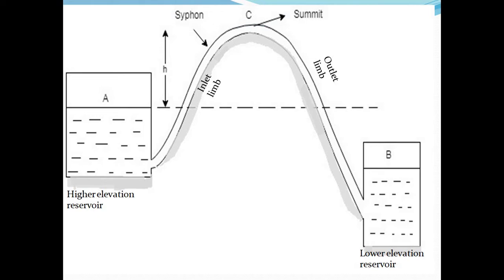This is a higher elevation reservoir and this is a lower elevation reservoir. This is a long bend pipe path. This is a siphon. You can say that a siphon uses a long bend pipe.